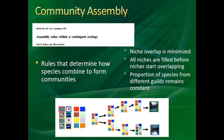Assembly rules are things that determine how species combine to form a community. The three most common ones are: niche overlap should be minimized, all niches are filled before niches start overlapping, and the proportion of species from different guilds remains constant. We can see all of those things in the specific rules we talked about in our last lecture.